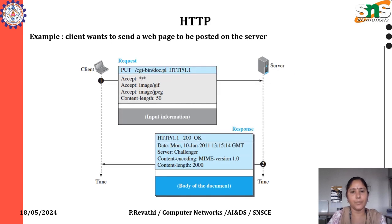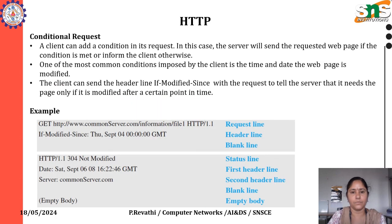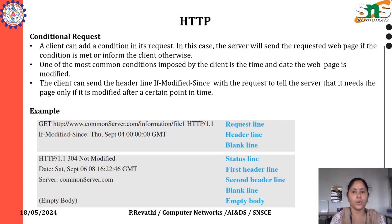The client wants to send a web page to be posted on the server. Conditional Request: A client can add a condition in its request. In this case, the server will send the requested web page if the condition is met, or inform the client otherwise. One of the most common conditions imposed by the client is the time and date the web page was modified. The client can send the header line If-Modified-Since with the request to tell the server that it needs the page only if it is modified after a certain point in time.